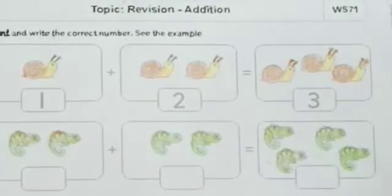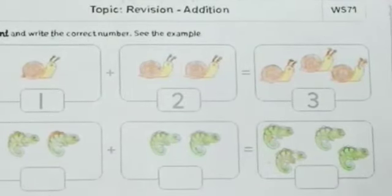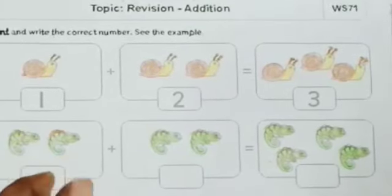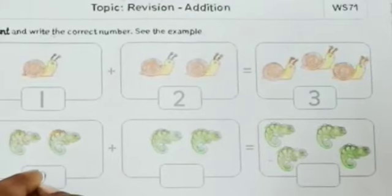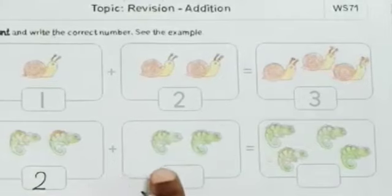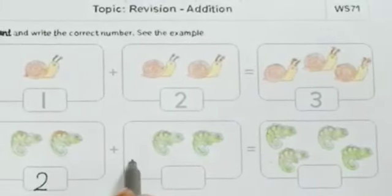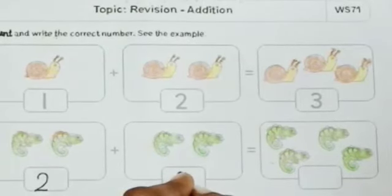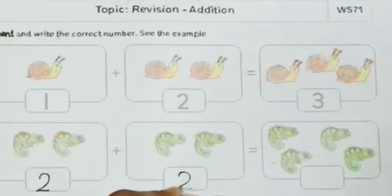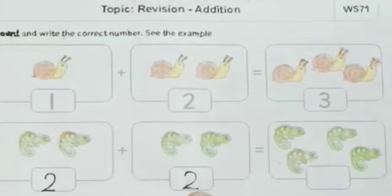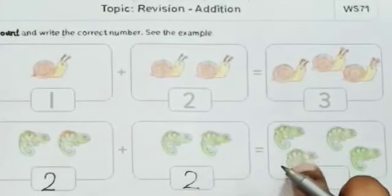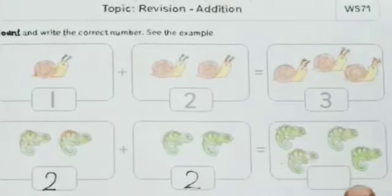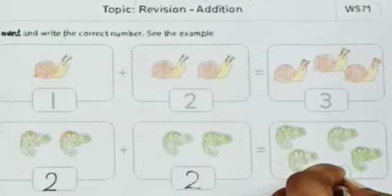We will move to the next question. These are reptiles. Now we will count how many reptiles are there in this box — 1, 2. So here we will write number 2. Now we will move to the next box: 2 plus. We count again — 1, 2. So we need to write number 2. Now 2 plus 2. We count all together — 1, 2, 3, 4. Children, the answer is number 4.